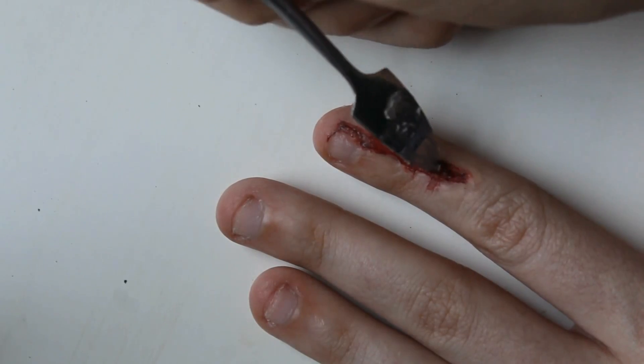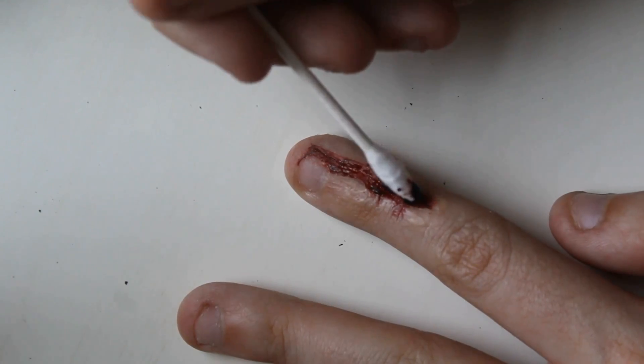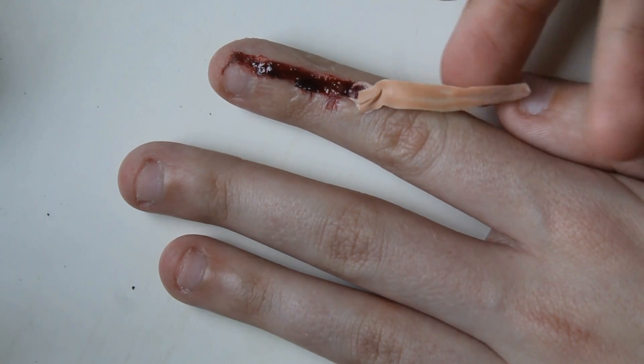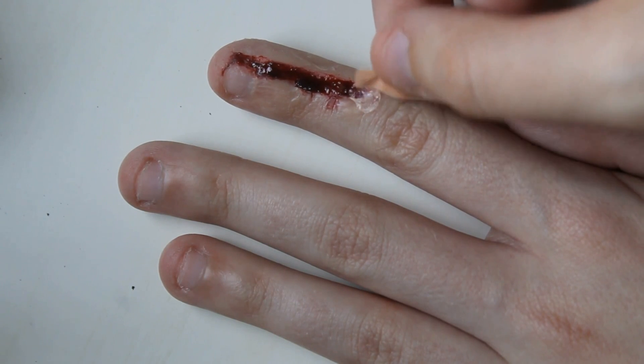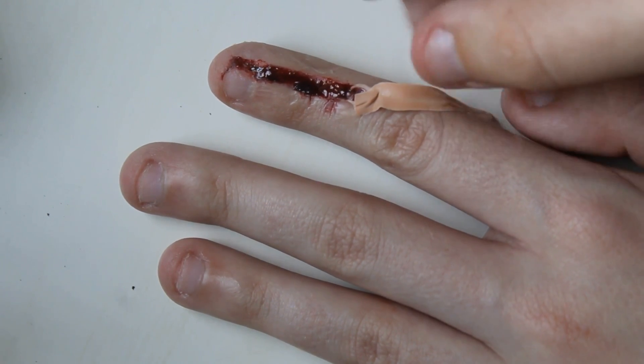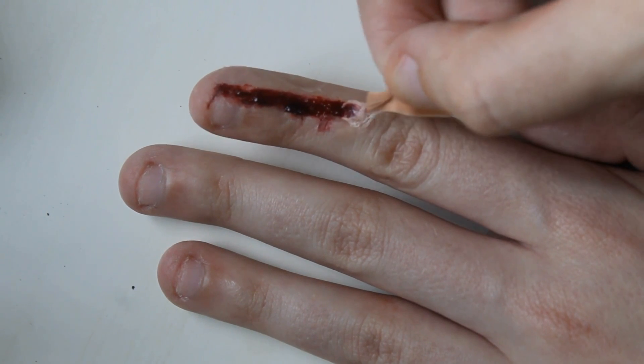I went over the wound with a little bit of scab blood and some liquid blood. When I was sticking on the flappy skin piece, I kind of messed up and stuck it on the opposite way. You should stick it on where it's over the wound, but I did it the wrong way.